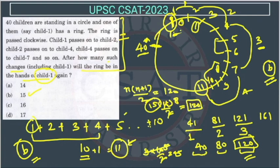So this is representing first change. This is representing second change. This is representing third change. So we know that summation from this we found. If we do summation till 15, then the ring will reach the first child. So 15 means 15 changes. So the answer is option B.